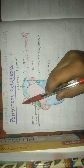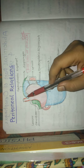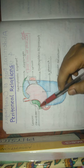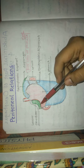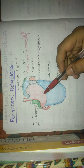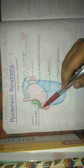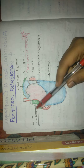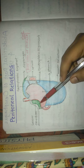The peritoneal relations of the stomach: the covering part is called the peritoneum, which covers the posterior and anterior surfaces. At the lesser curvature, the posterior surface and the anterior surface meet and continue as the lesser omentum.